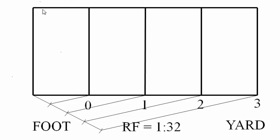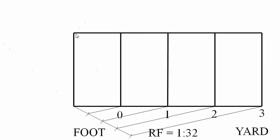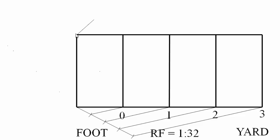This first portion represents a distance of one yard, and one yard equals three feet. To show a division of one foot each, this portion needs to be divided into three equal parts.